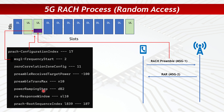The UE generates a preamble using the root sequence index and cyclic shift — for example, it may randomly select preamble number 5. The RAR (Message 2) contains an indicator telling the UE that this RAR is specifically for preamble number 5. This is how the UE identifies that the RAR is addressed to it, since at this stage there is no RNTI, C-RNTI, or T-RNTI assigned. The allocation is therefore understood based on the preamble ID.